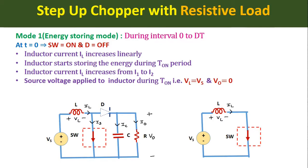Mode 1 is the energy storing mode, occurring during the interval t = 0 to t = dT. At t = 0, switch SW turns on and starts conducting, acting as a short circuit. The voltage across the inductor has polarity positive on the X point and negative on the Y point due to the DC input voltage. This negative polarity goes to the p-side of diode D, putting it in reverse bias, so diode D turns off and acts as an open circuit.